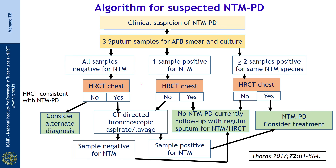How do we diagnose NTM pulmonary disease? When an individual presents with symptoms of cough and fever and is not responding to regular anti-tuberculosis or antibacterial treatment, there should be high suspicion of NTM pulmonary disease. Three sputum samples are collected and sent for AFB smear microscopy and culture. If all three AFB smears are negative but clinical suspicion persists, a CT scan of the chest is indicated. If the CT scan is suggestive of NTM, a bronchoscopic aspirate and lavage should be sent for culture again.